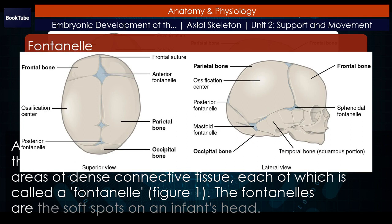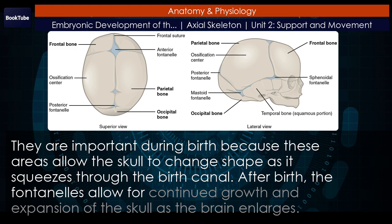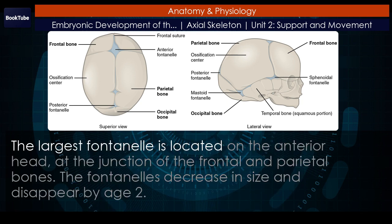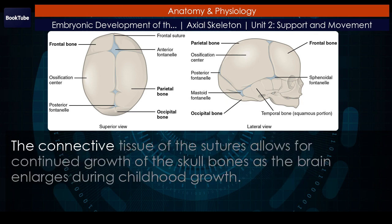The fontanelles are the soft spots on an infant's head. They are important during birth because these areas allow the skull to change shape as it squeezes through the birth canal. After birth, the fontanelles allow for continued growth and expansion of the skull as the brain enlarges. The largest fontanelle is located on the anterior head, at the junction of the frontal and parietal bones. The fontanelles decrease in size and disappear by age 2. However, the skull bones remain separated from each other at the sutures, which contain dense fibrous connective tissue that unites the adjacent bones. The connective tissue of the sutures allows for continued growth of the skull bones as the brain enlarges during childhood growth.